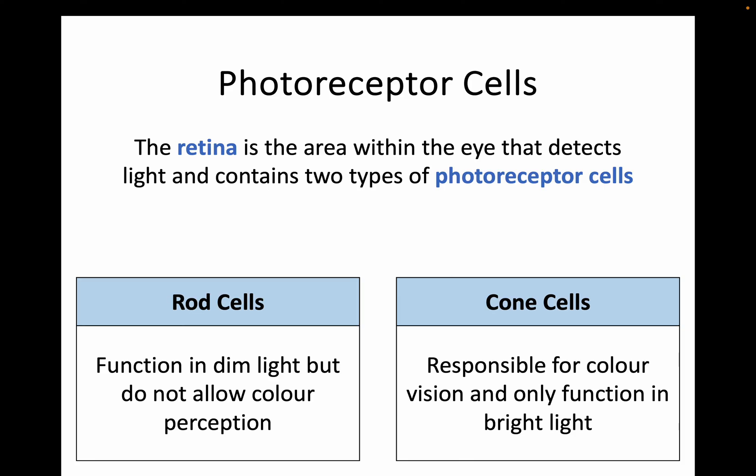The retina at the back of the eye detects light and contains two types of photoreceptor cells. Rod cells are able to function in dim light — they don't need lots of bright light — so they're very useful from an evolutionary perspective. However, they don't allow any sort of colour perception; this is just black, white, and grey vision. Cone cells, on the other hand, are responsible for colour vision and work in a slightly different way, but they require bright light to function. It's important you know the differences between them and which one controls which type of vision.